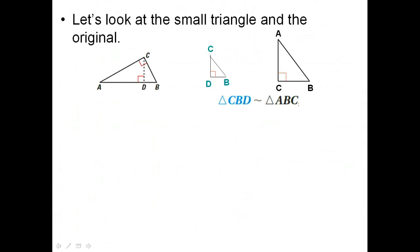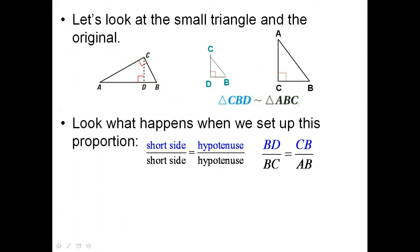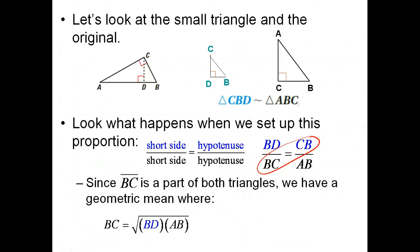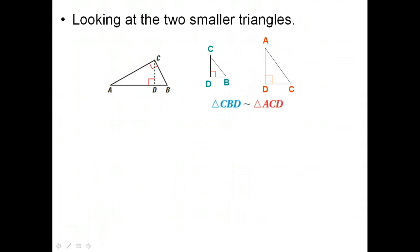If we look at the small triangle in the original, but we set it up where the short sides are compared and the hypotenuses are compared, then we see that, once again, we have the same thing in both of the means. So BC and CB are the same. So we can see that BC is a part of both triangles. We have a geometric mean where BC is equal to the geometric mean of BD and AB. Now I'm going to show you when I get through this how to pick this stuff out.